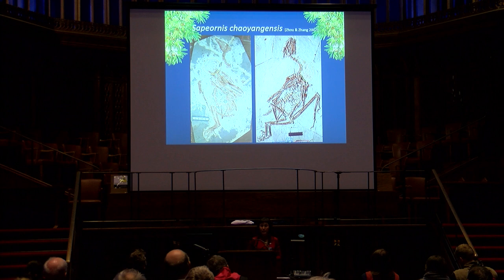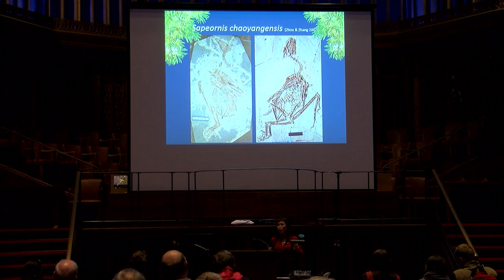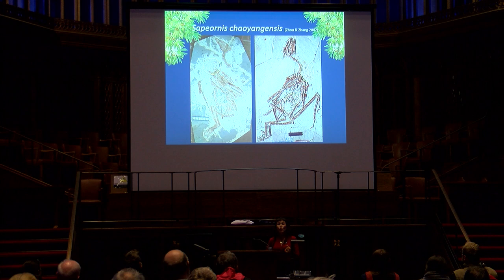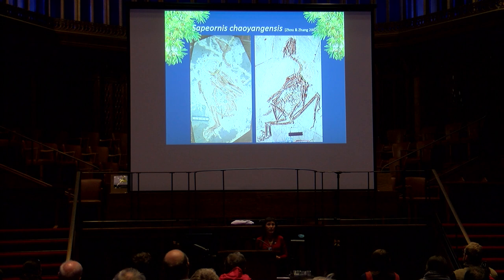Sapeornis is known from 106 specimens. We have a handful of specimens preserving seeds in the crop, and specimens preserving gastroliths in the ventriculus. Some specimens preserve both simultaneously, like the specimen shown here. The seeds are always preserved in the crop in a very low position resting on the furcula, which is exactly what you see in the morphology of the crop in living granivorous birds. Notably, this seems to be the most basal known occurrence of a crop within Aves, and this feature is unknown outside of this clade.